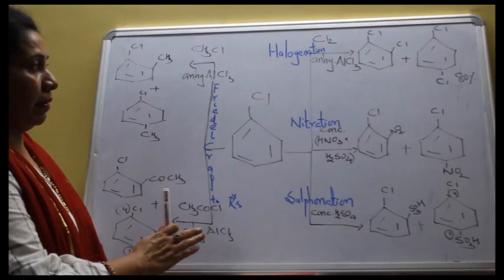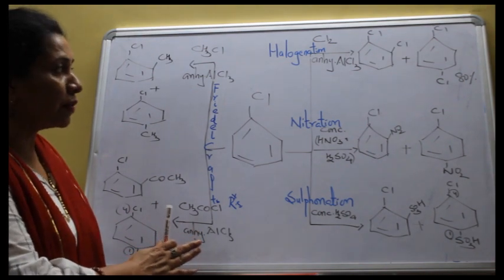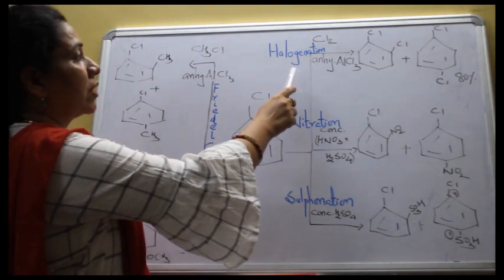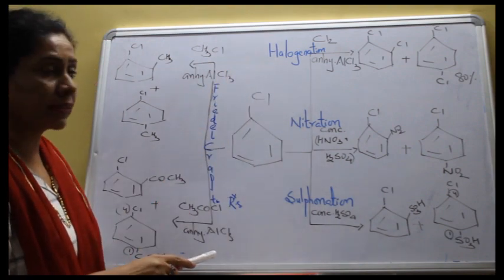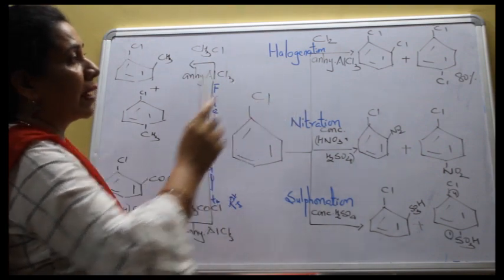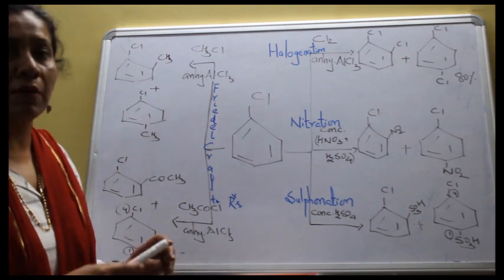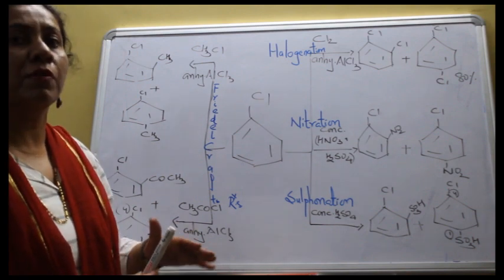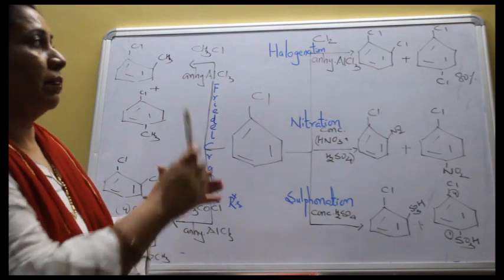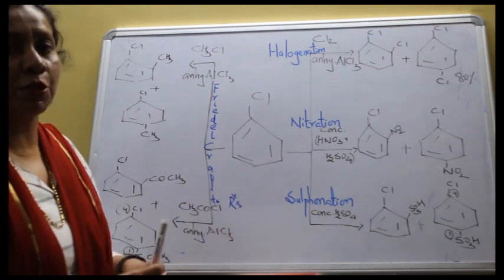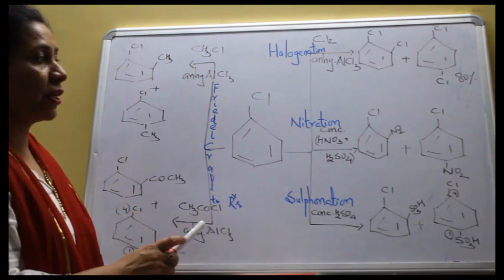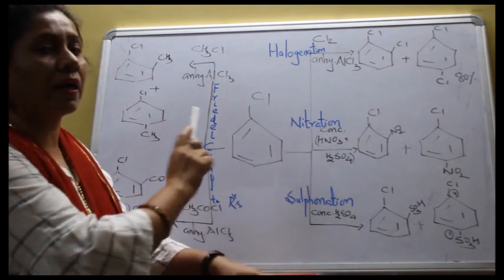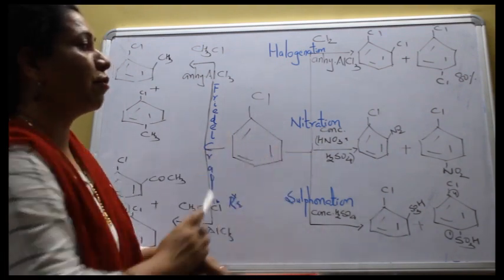Here is a flow chart showing all the electrophilic substitution reactions of chlorobenzene. First, halogenation, done in the presence of chlorine and anhydrous AlCl3, giving ortho and para products: 1,2-dichlorobenzene and 1,4-dichlorobenzene. The para product is always the major product — about 80% — because of lower steric hindrance, while the ortho product accounts for about 20%. Second, nitration, done with a nitrating mixture of concentrated nitric acid and concentrated H2SO4, resulting in formation of nitro compounds. Third, sulfonation, done using concentrated sulfuric acid.